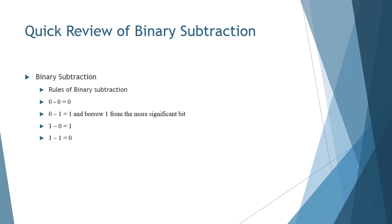Now since binary subtraction is such an important part of binary division, we're going to go over a quick review to make sure everybody's up to scratch. So the rules of binary subtraction are as follows: 0-0 will give you a 0. 0-1 will give you a 1 because you borrow a 1 from the more significant bit. 1-0 will give you 1 and 1-1 will give you 0.